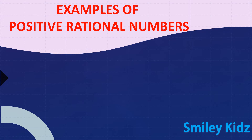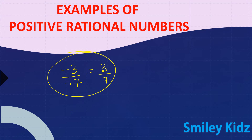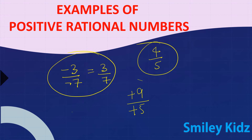Let's see a few examples of positive rational numbers. Minus 3 by minus 7 — this is a positive rational number because it can be written as 3 by 7. Next, 4 by 5 is also a positive rational number. Plus 9 by plus 5 is also a positive rational number. All these are positive rational numbers.